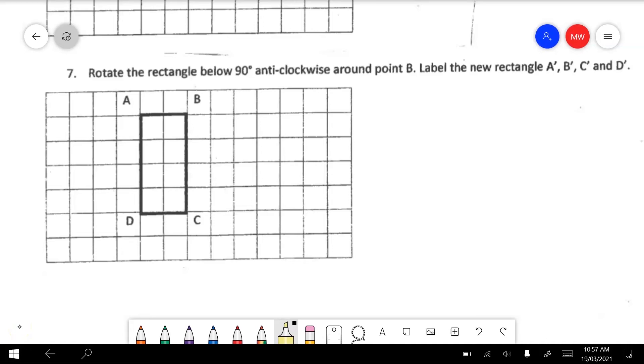Question seven is another rotation one. Now we're being asked to rotate this shape 90 degrees in an anti-clockwise direction. Now it's important that it says around point B. So what you have to imagine doing is sticking a pin in this point. And then we're going to rotate the shape 90 degrees in an anti-clockwise direction. So what will happen is B will stay exactly where it is and become B dash. A will swing down to here and this will become A dash.